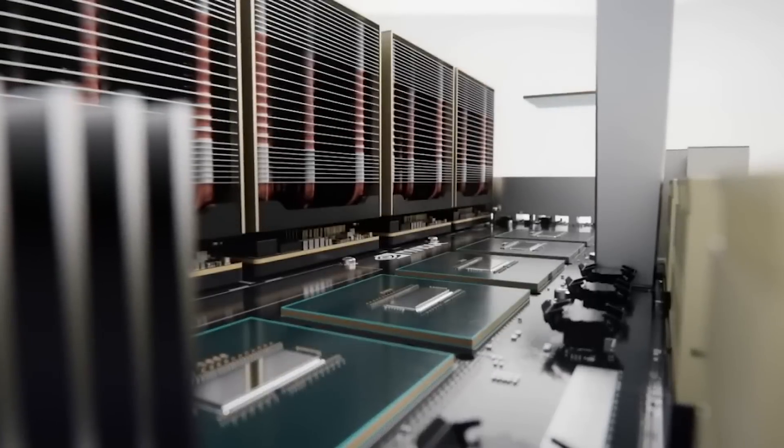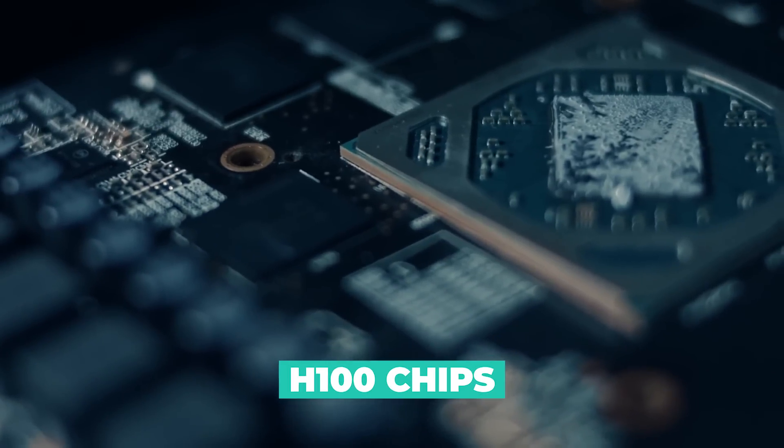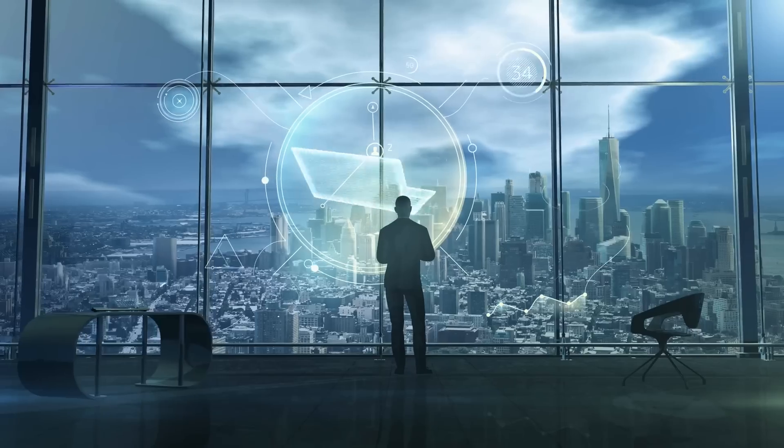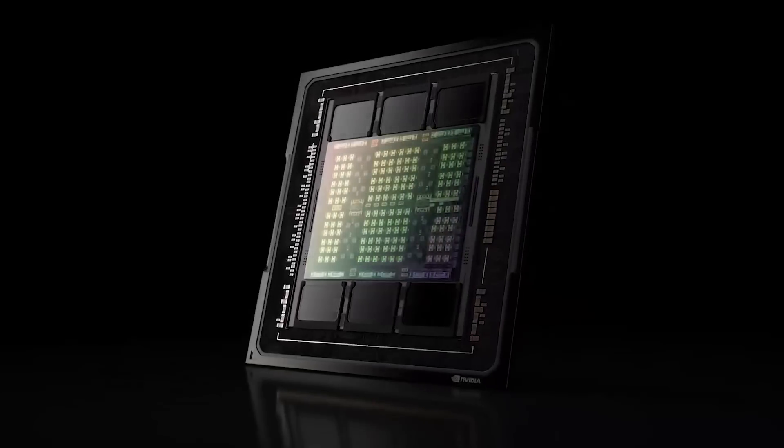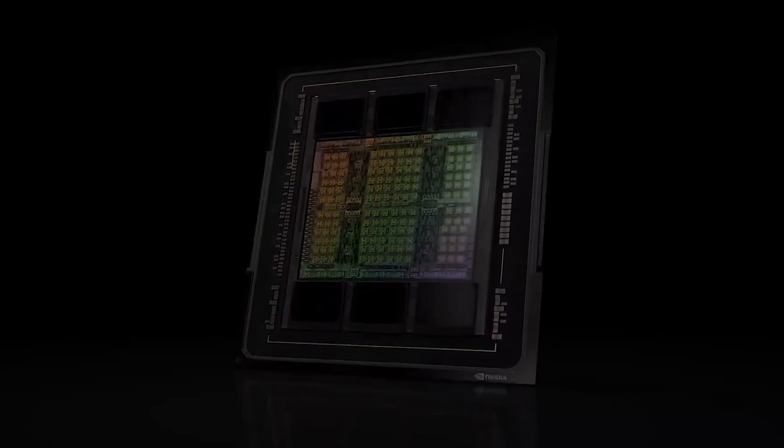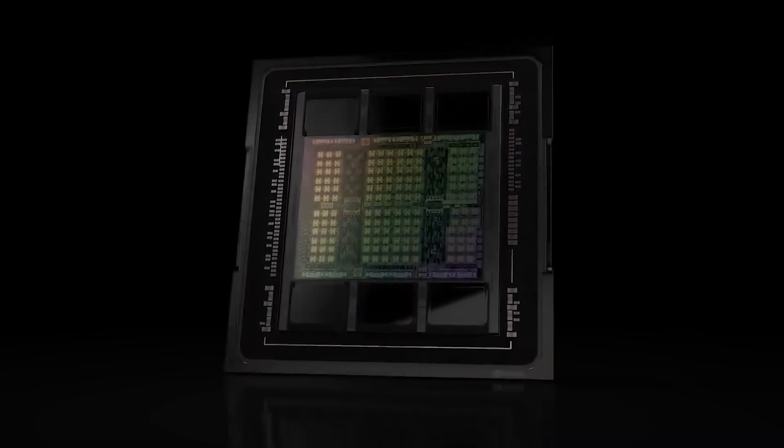NVIDIA's A100 GPUs, tailored for machine learning and deep learning applications, and their new H100 chips were highlighted. These H100 chips are being shipped to major companies and offer significant improvements in AI training speed. For instance, NVIDIA's H100 chips are 9 times faster for AI training.